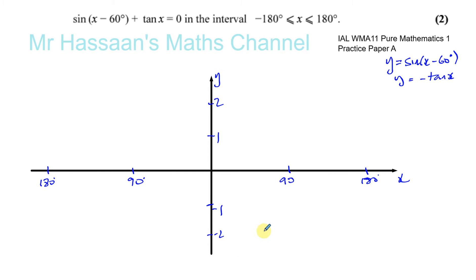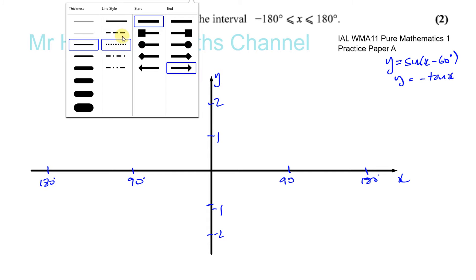The tan curve has asymptotes at 90 degrees. The tan curve normally looks like this — it has asymptotes at 90 degrees and then it repeats every 180. The tan curve repeats every 180 degrees, so you'll have an asymptote going like this.